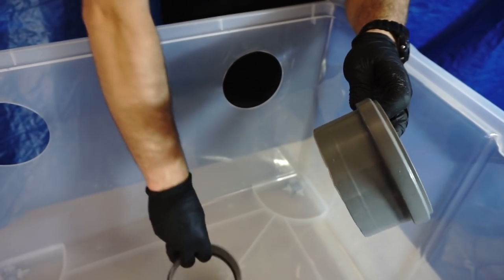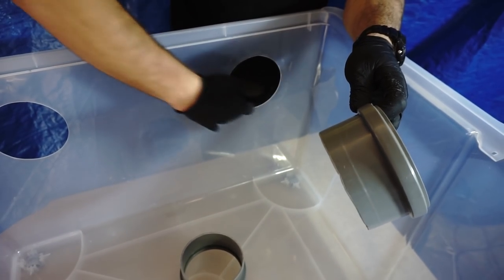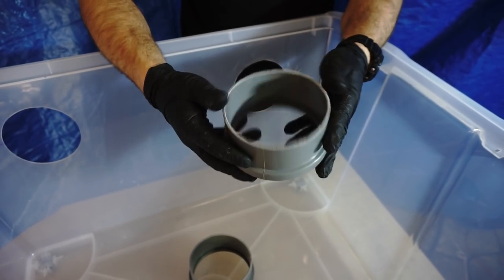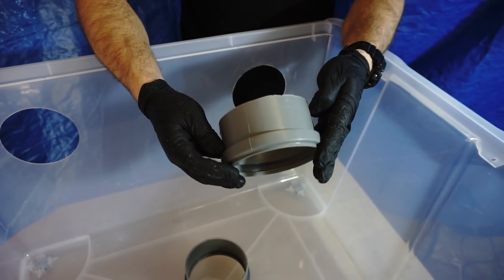Holes are ready, and we can mount pipe couplers in them. Depending on how well you cut the holes, it might be necessary to seal the edge so that dust does not escape. This can be sealed with silicone or tape.